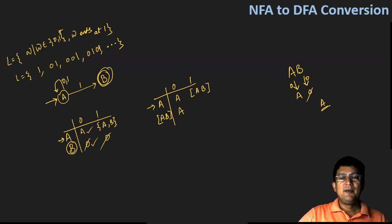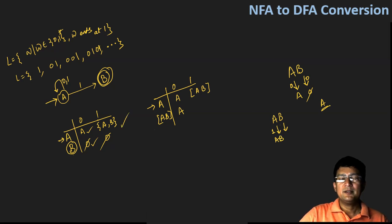Similarly, if I'm looking at the transition of AB at symbol one, I'll refer to the NFA table. The transition of A with symbol one goes to AB state. The transition of B with symbol one is not defined, so it will be phi. I will take the union of these two, so the union will be AB. Now I did not get any new state in the second row, so I will stop my process here.